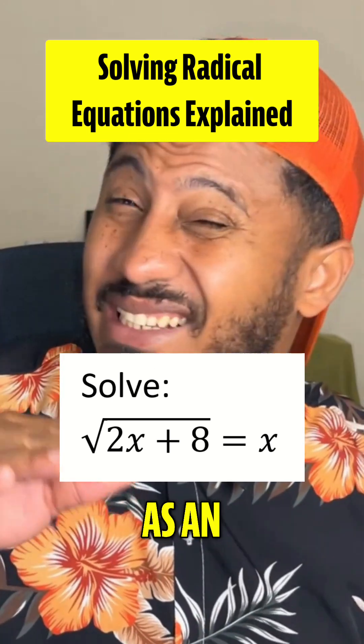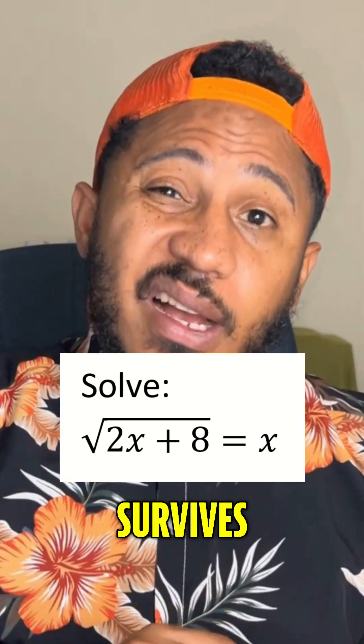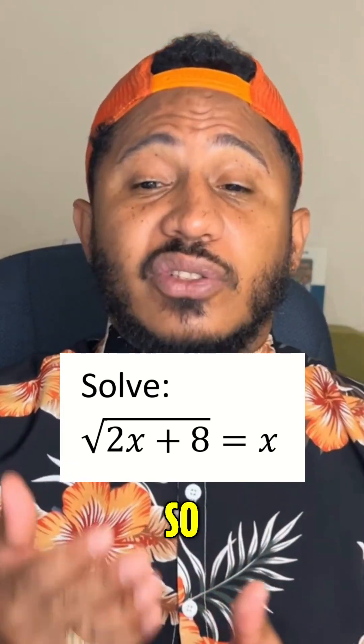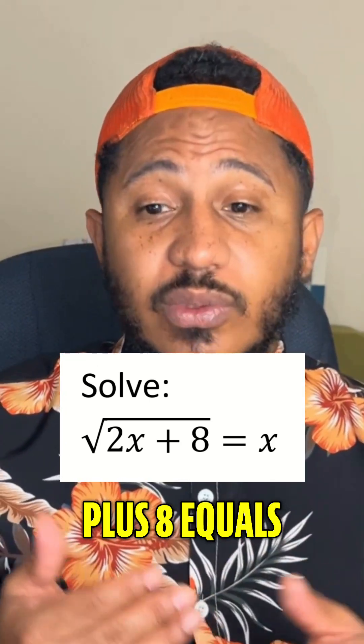One rule checks out. The other sneaks in as an extraneous trap. Let's see which one survives. It's the math guy, Steve. Solve for x. Okay, so square root of 2x plus 8 equals x.